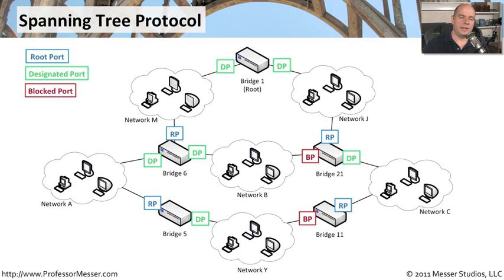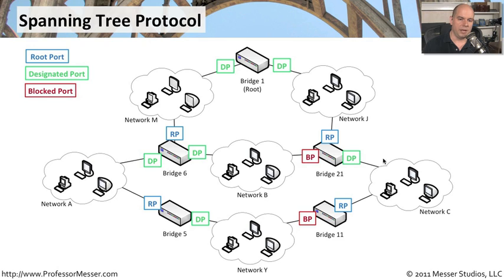In this particular network, we've set up a number of different bridges and connected them all together with Spanning Tree Protocol running. There is one bridge on the network that becomes the root bridge — one that you can configure to be the root bridge, or Spanning Tree can figure this out on its own. Every other bridge connecting these networks together is going to have one port that connects back to the root bridge — that port is the root port. The other port available to send traffic through on these bridges is the designated port, shown as the green DP on each one. Also, if there's a case where a loop may be occurring, the bridges figure that out using Spanning Tree and set up a blocked port to make sure traffic does not go out that particular port.